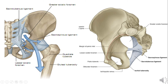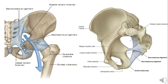The sacrotuberous ligament arises from the posterior outer part of the sacrum and attaches to the ischial tuberosity. The sacrospinous ligament arises from the lateral side of the sacrum, anterior to the sacrotuberous ligament, and attaches to the ischial spine. From a superior view, one can clearly identify the greater sciatic foramen and the lesser sciatic foramen formed by these ligaments. Further detail on these foramina is provided in BD Chaurasia's anatomy text.